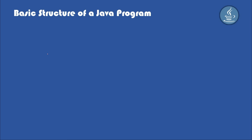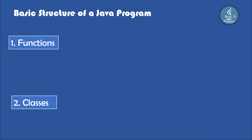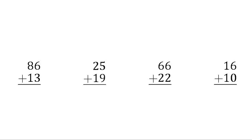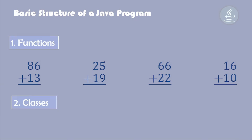We will see the basic structure of a Java program. In Java programs, we have functions, and we have classes. A function is a group of code that does something. For example, if your function is to add two numbers, then you write code to add two numbers inside that function. When you need to add two numbers, you can call the function.